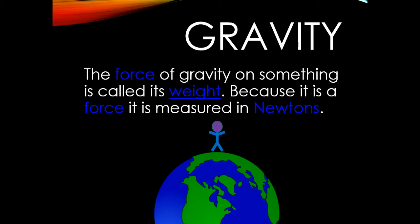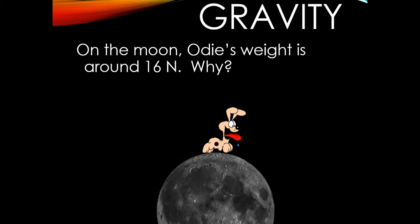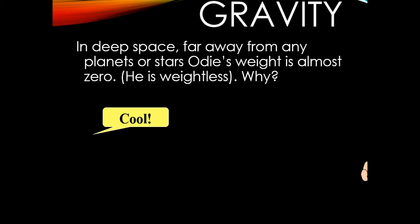The force of gravity on something is called weight because it is a force, and it's measured in newtons. On Earth, OD's weight is about 100 newtons. On the Moon, OD's weight is around 16 newtons. Can you think of why? The difference is the gravitational force — the gravitational force on the Moon must be less than on Earth. In deep space, far away from other planets and stars, OD's weight is almost zero — he's pretty much weightless, because the gravitational force is pretty much zero.